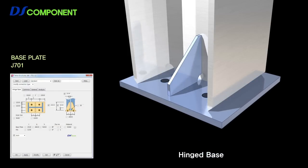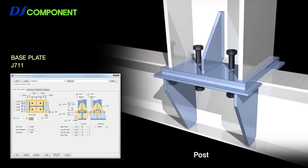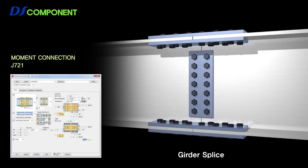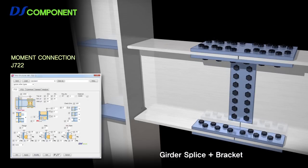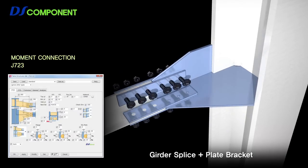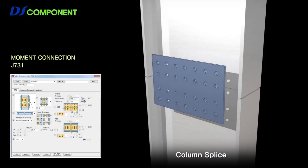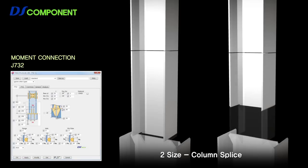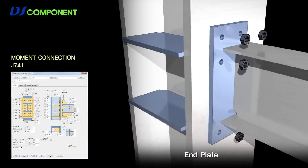Base plate component creates hinged base plate connection and post connection. Girder splice connection, girder splice and bracket connection, and girder splice and plate bracket connection are all girder splice moment components. Moment components are used on column splice connection and two-column splice connections of different sizes, able to join various end plate connections.